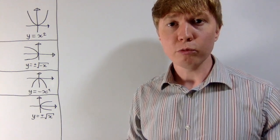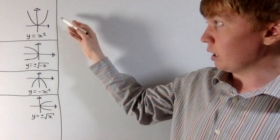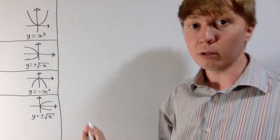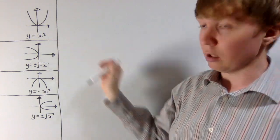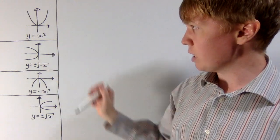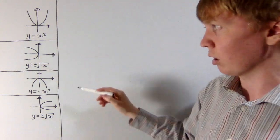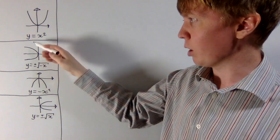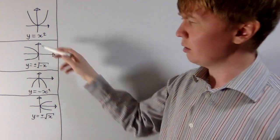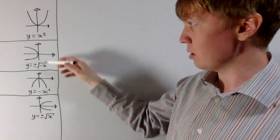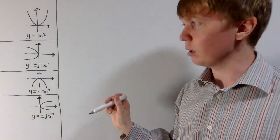We're going to look at a fun problem to do with rotating graphs of functions. If you imagine the graph of y equals x squared, we can rotate this 90 degrees anti-clockwise. You can see this new rotated curve is no longer the graph of a well-defined function — you've got this one-to-many behaviour where for some inputs you'd have multiple outputs.